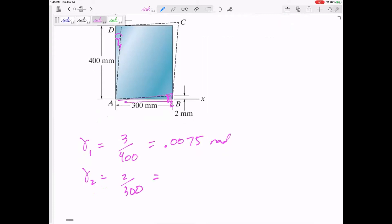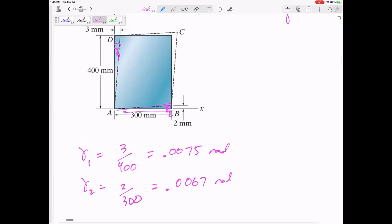And gamma two will be two over 300. I'm just looking at this triangle. If I want to find the angle of that triangle, opposite over adjacent, no need to do the tangent. This would be 0.0067 radians.